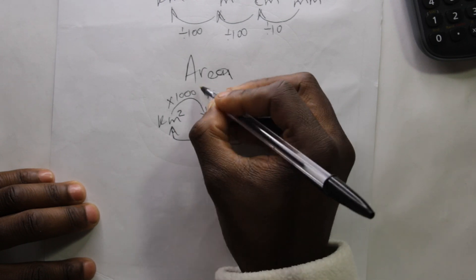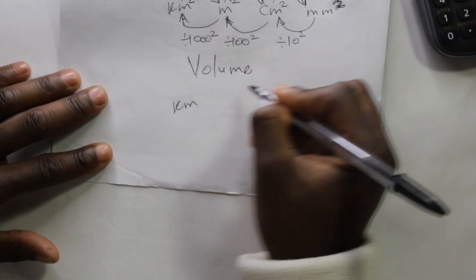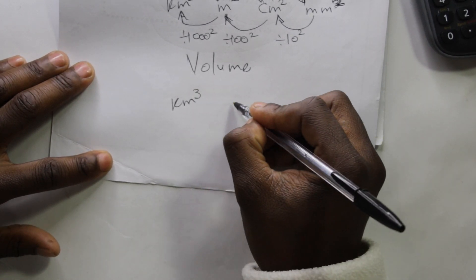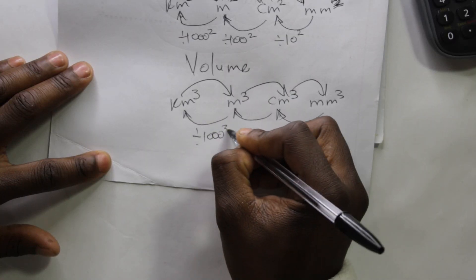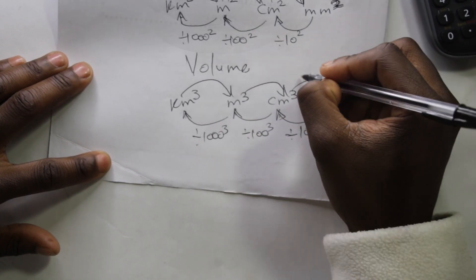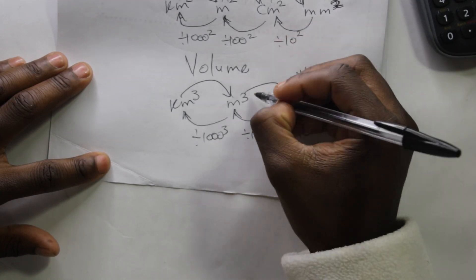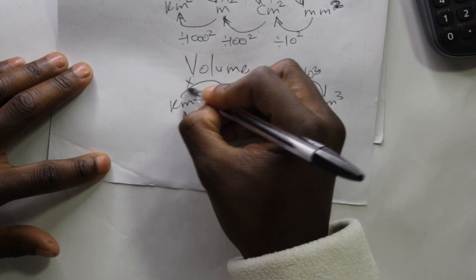Square meter multiplied by one thousand, square meter multiplied by one hundred, square meter multiplied by ten. Now the metric system for volume: kilometer cubed, centimeter cubed, and millimeter cubed. We divide by one thousand cubed, divide by one hundred cubed, divide by ten cubed; multiply by ten cubed, multiply by one hundred cubed, multiply by one thousand cubed. This is the metric system for measurement.